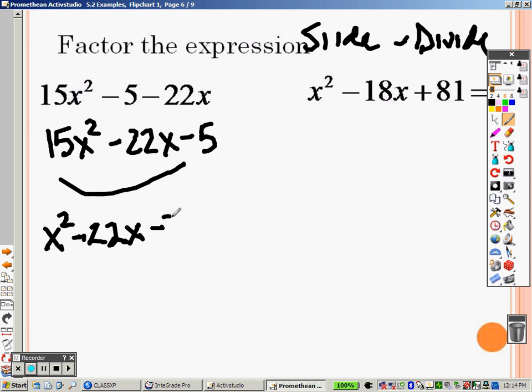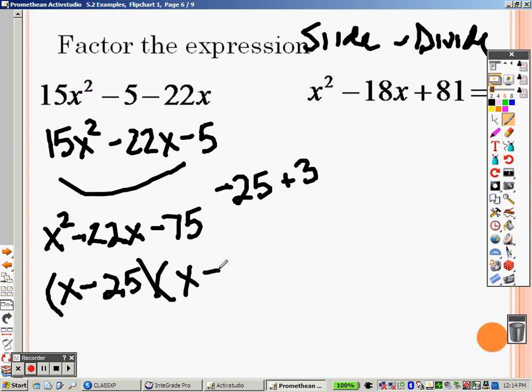So quickly in my head, you can sit there and try to think of all of them. But what comes to mind to me is negative 25 and positive 3. Negative 25 times 3 is negative 75. Negative 25 plus 3 is negative 22. So this goes into x minus 25. And x plus 3.